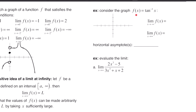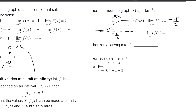Consider the graph of f(x) = arctan(x). It has horizontal asymptotes at y = π/2 and y = −π/2. The limit as x goes to negative infinity of f(x) equals −π/2, and the limit as x goes to positive infinity of f(x) equals π/2. This is a case where we have two horizontal asymptotes: y = −π/2 and y = π/2.